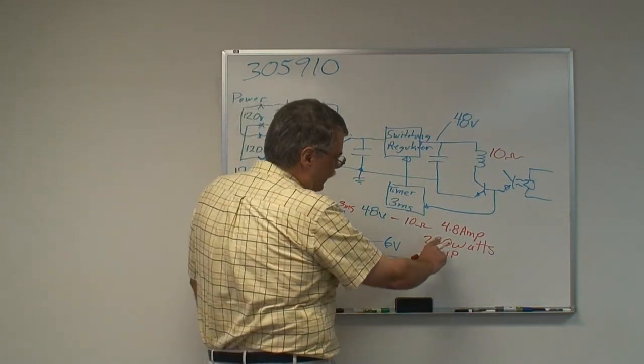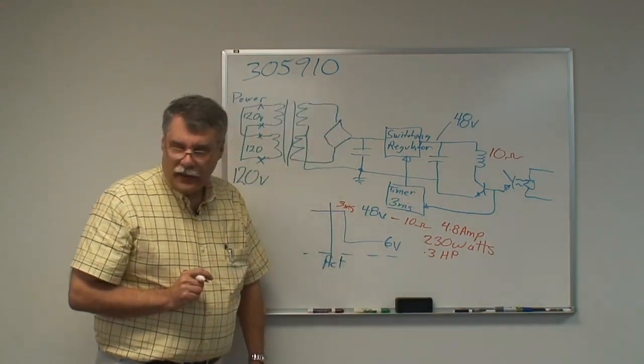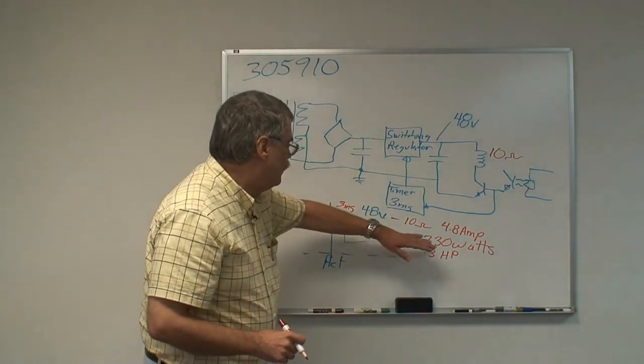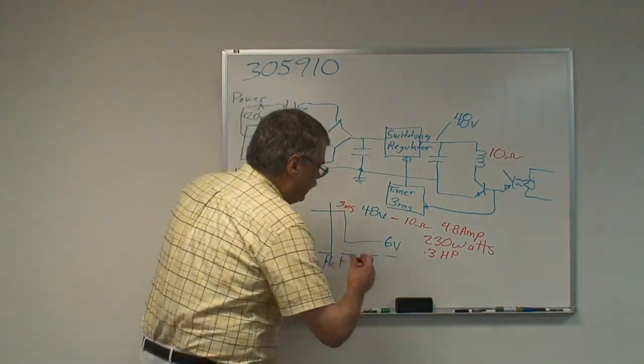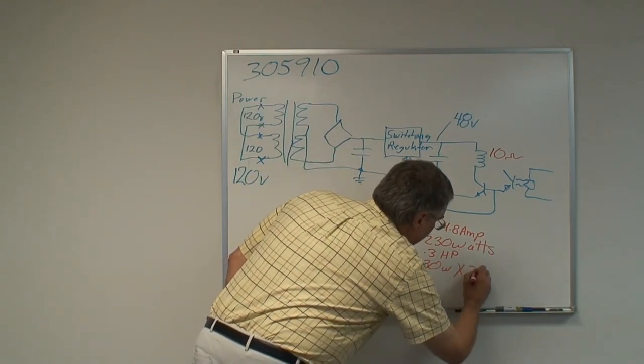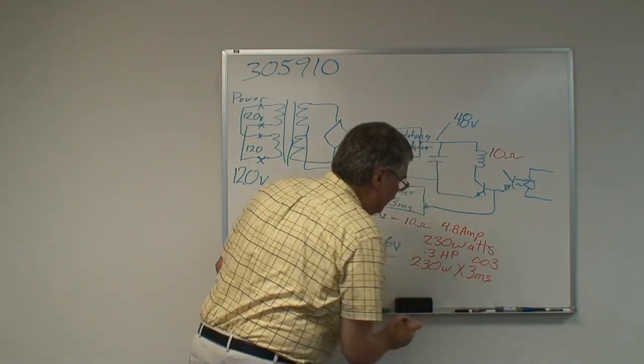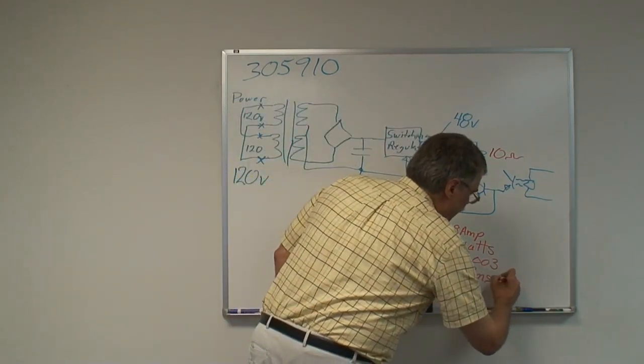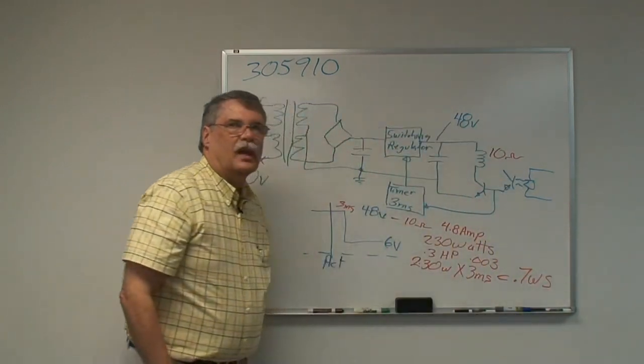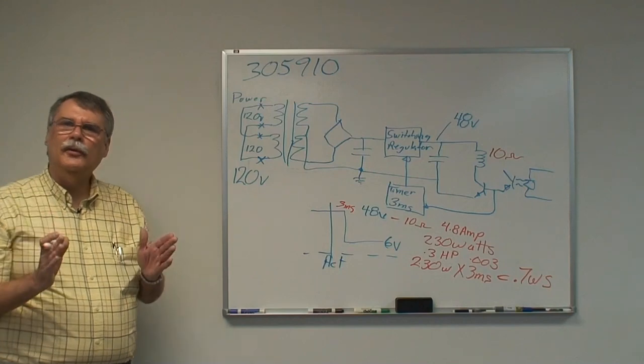So we have 3 milliseconds and 230 watts. So that's really the amount of power that we're putting into this thing. That ends up the 230 watts times 3 milliseconds, so that's 230 watts times 3 milliseconds, 0.003 seconds, equals about 0.7 watt seconds. All of a sudden, 0.7 watt seconds isn't a whole bunch of power anymore, because it's on for such a short time.